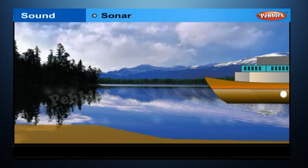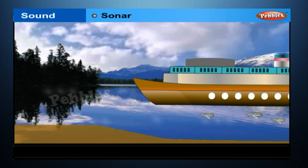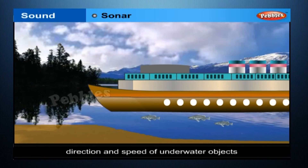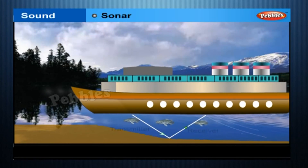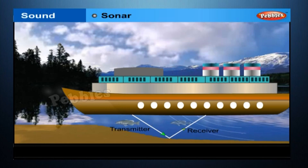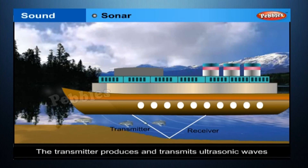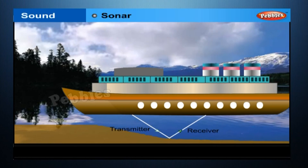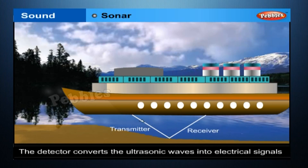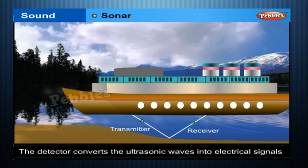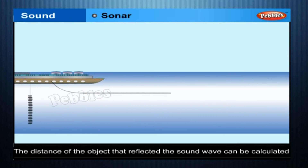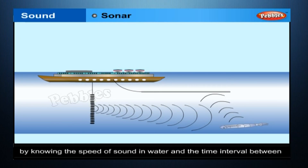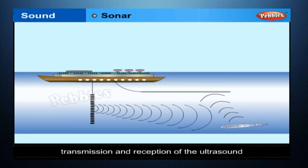Sonar. The acronym SONAR stands for Sound Navigation and Ranging. Sonar is a device that uses ultrasonic waves to measure the distance, direction, and speed of underwater objects. Sonar consists of a transmitter and a detector and is installed in a boat or a ship. The transmitter produces and transmits ultrasonic waves. These waves travel through water and, after striking the object on the seabed, get reflected back and are sensed by the detector. The detector converts the ultrasonic waves into electrical signals which are appropriately interpreted. The distance of the object can be calculated by knowing the speed of sound in water and the time interval between transmission and reception of the ultrasound.